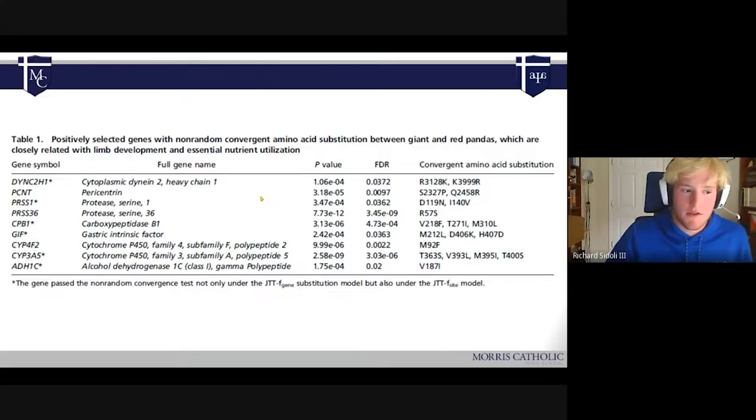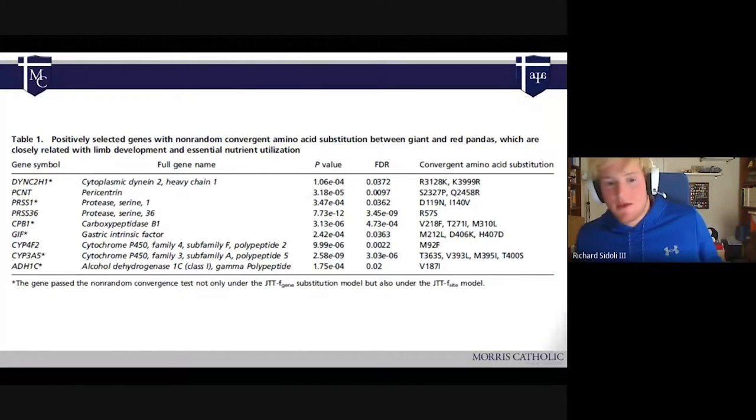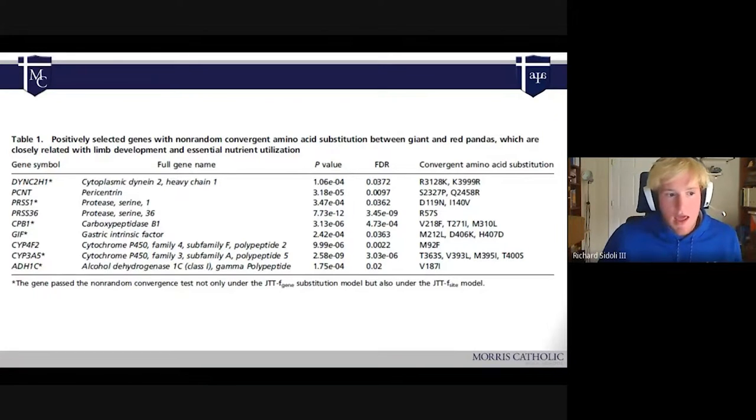Beyond the actual pseudo thumb, another interesting similarity between the two is their digestion. Both red and giant pandas are carnivores, but they have an herbivorous diet, which means that they're designed to eat meat, but in practicality, they end up eating only bamboo. This can cause a bunch of issues if they weren't properly evolved to do so. Since they both evolved in a bamboo rich environment, and at some point switched to an entirely bamboo diet, they developed different enzymes and proteins that allow them to better digest bamboo.